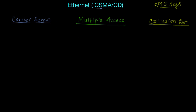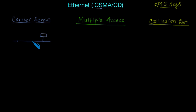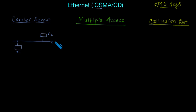What is Carrier Sense? When multiple channels are accessing the same carrier — let's say we have a channel and multiple nodes connected, N1 and N2 — both are targeting to transfer data over the same carrier. The problem arises when both nodes are trying to transfer data at the same time.